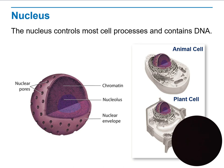The nucleus is the control center for most cell processes, and it is important because it contains the genetic information — it contains all of the cell's DNA, which codes the instructions for making proteins and other important molecules.